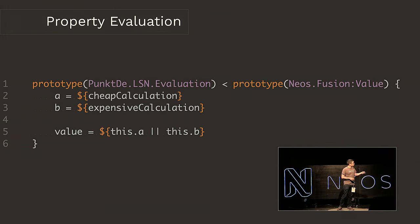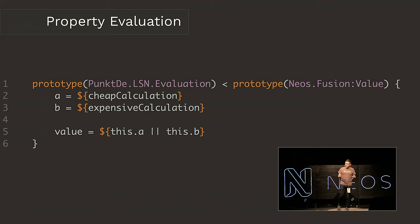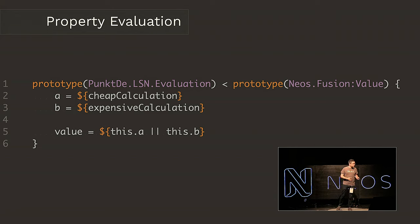And then we have B — something expensive like traversing through the whole content tree and searching for a fallback. If you use value like that — if you assign that — then A is used as long as it's filled with data. And if it's not, then B is evaluated. B is only evaluated if A is not filled. Fusion is not imperative, so A and B are not calculated if not needed.